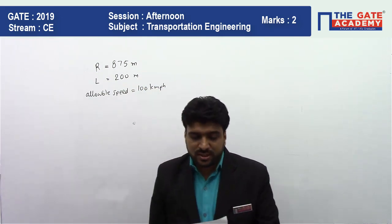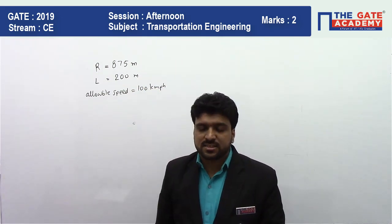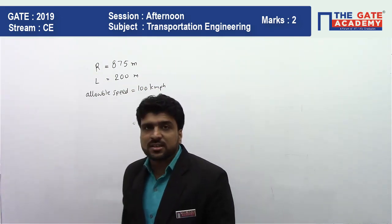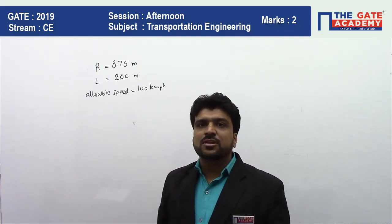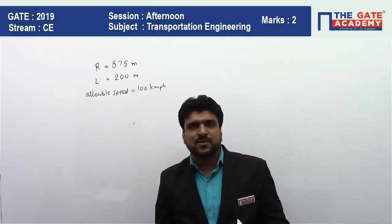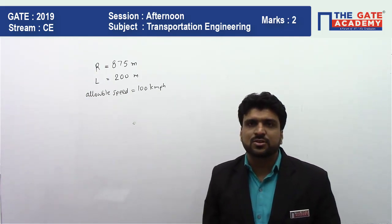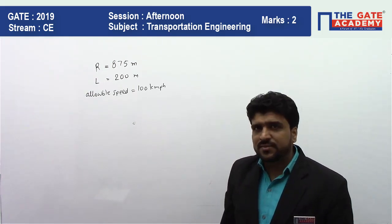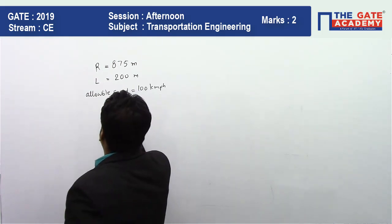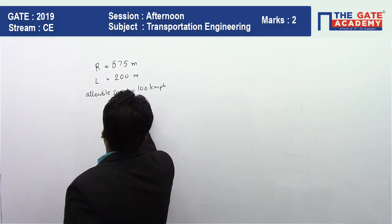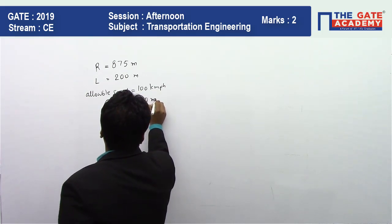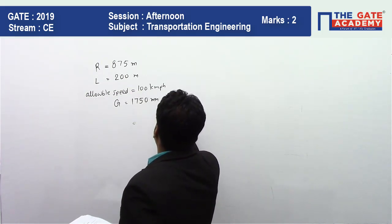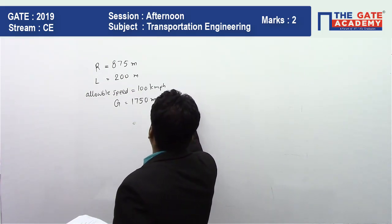For cant calculation, take the gauge distance equal to 1750 mm. Generally the gauge distance for broad gauge is not 1750 mm, but it has been given in the question so we need to take that only. So G is given as 1750 mm, or we can say 1.750 meters.